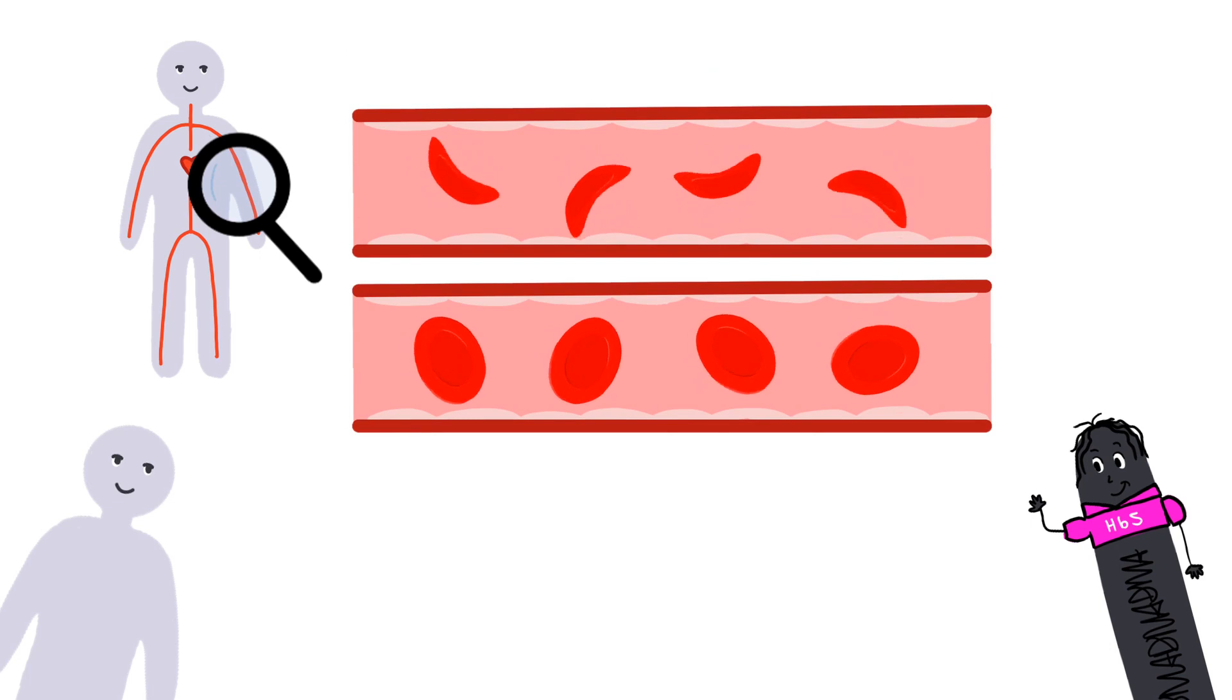Red blood cells are the oxygen transporters in our body, so naturally we need a lot of them. Unfortunately, sickle cells are rigid and sticky, so they worsen blood flow and have a shorter lifespan than normal cells. So, too many sickle cells causes a shortage of red blood cells, resulting in anemia.